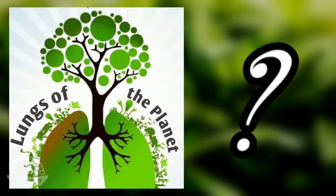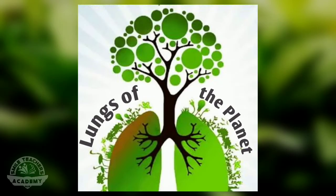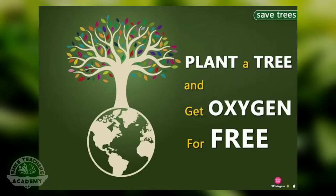Do you know why plants are called lungs of the planet? Because they give us oxygen to breathe and take the carbon dioxide from us, which is unpure. Plants keep our earth clean, so they are called lungs of our earth. We depend on plants for many of our needs. So plant a tree and get oxygen for free.